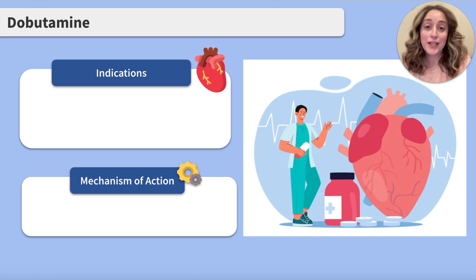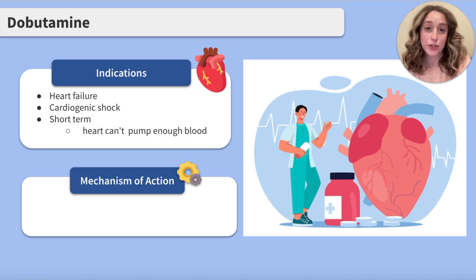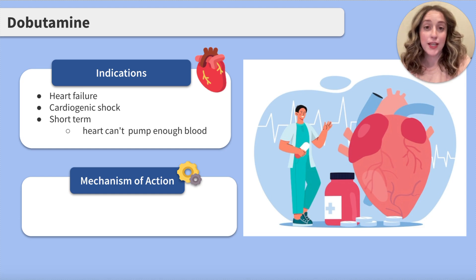Dobutamine is a medication primarily used to treat hypotension from cardiac conditions such as heart failure and cardiogenic shock. It is commonly used in the short term when the heart is unable to pump enough blood to meet the body's demands.